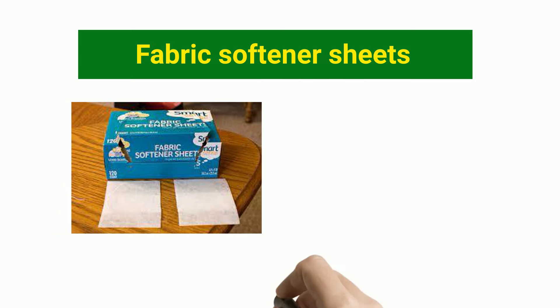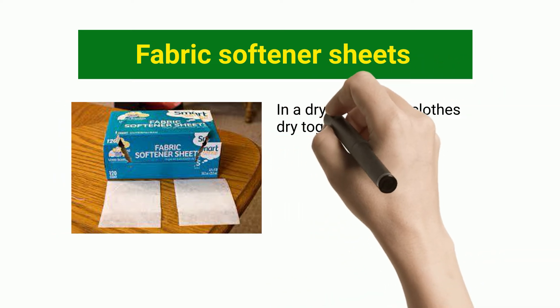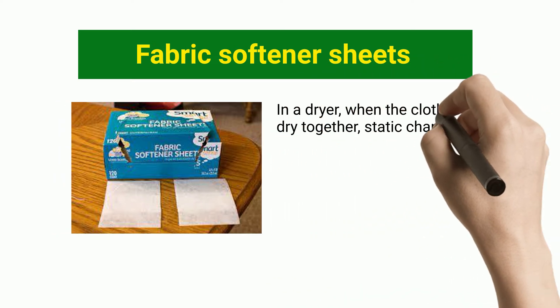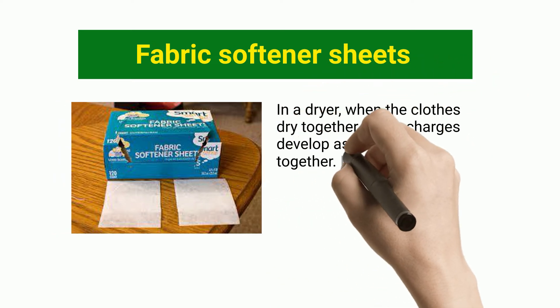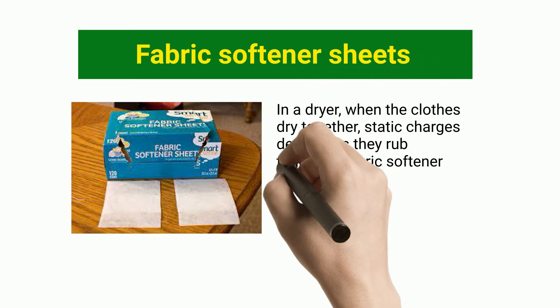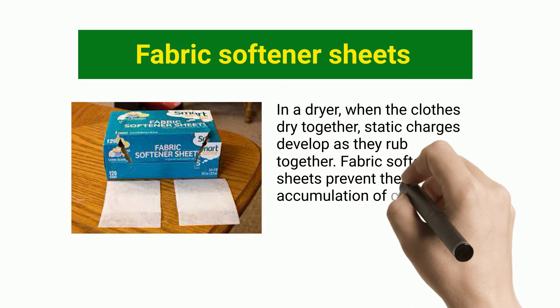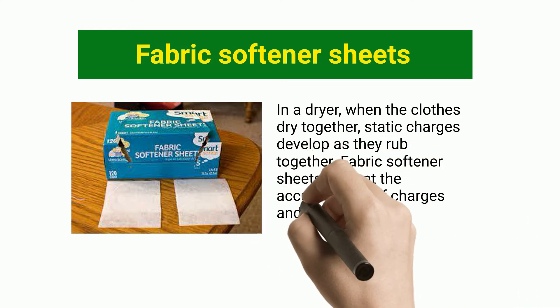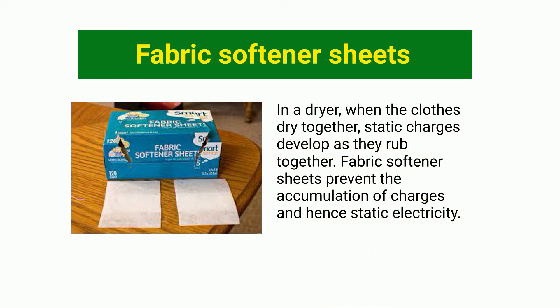In a dryer, when clothes dry together, static charges develop as they rub together. Fabric softener sheets prevent the accumulation of charges and hence static electricity.